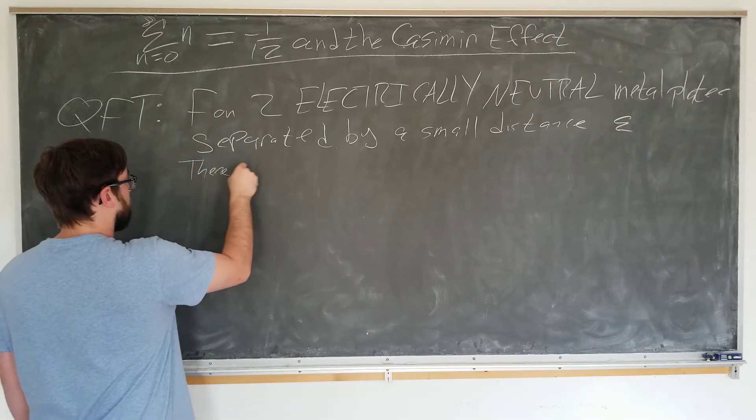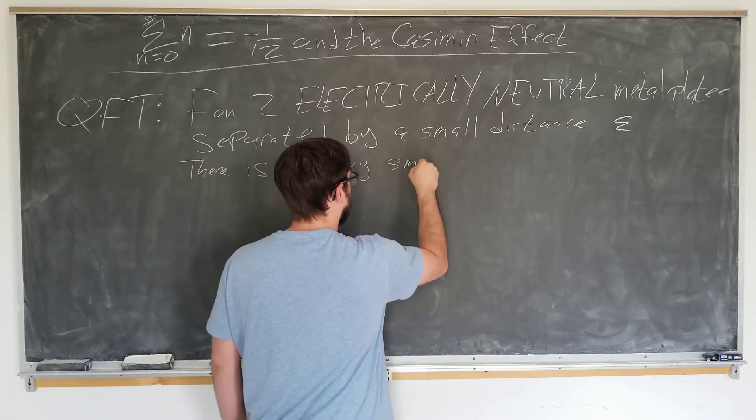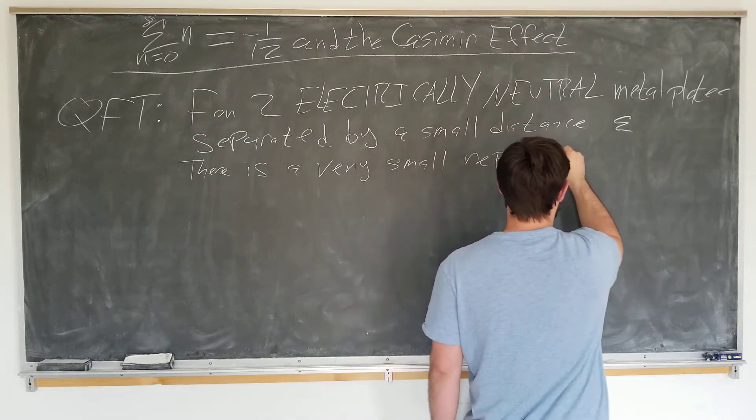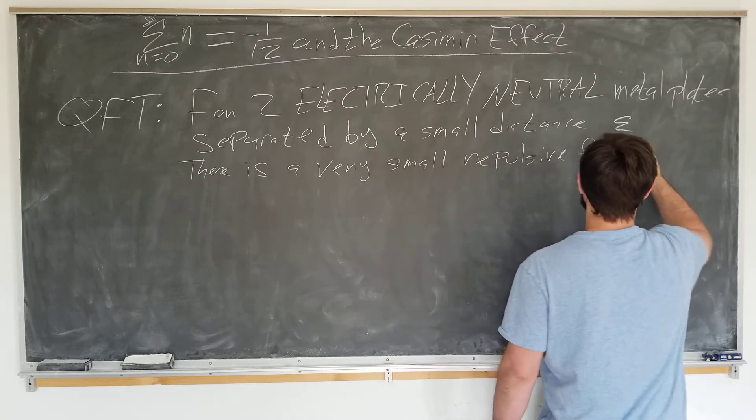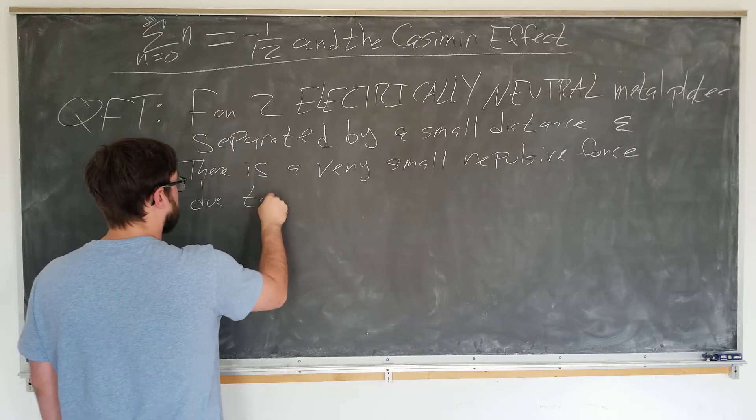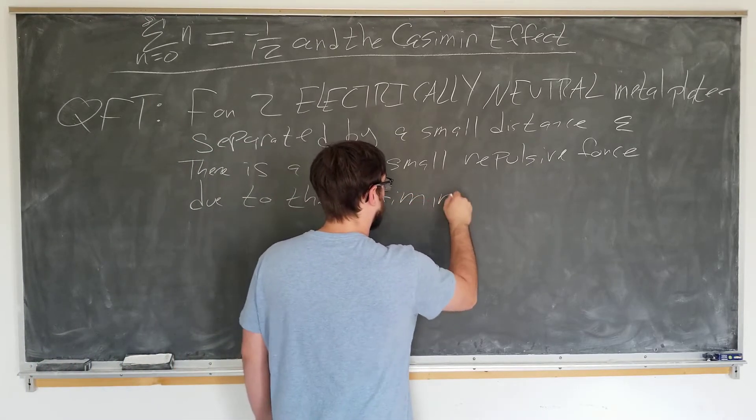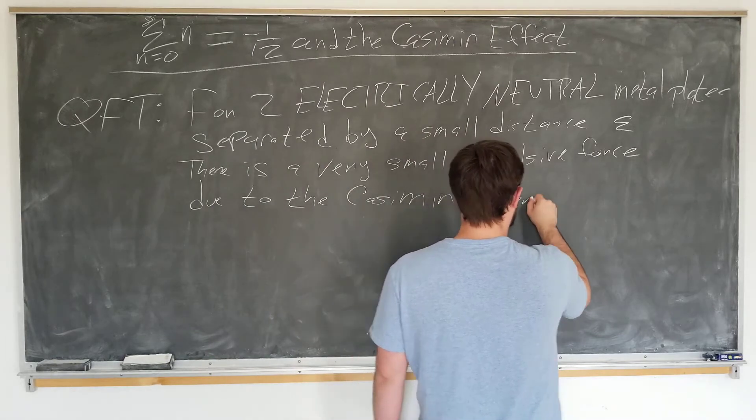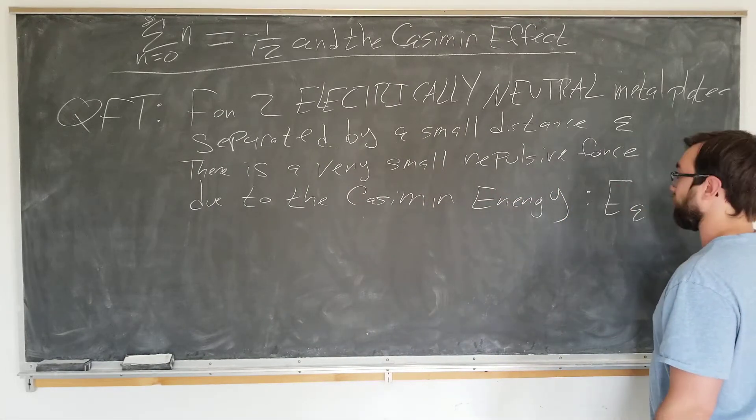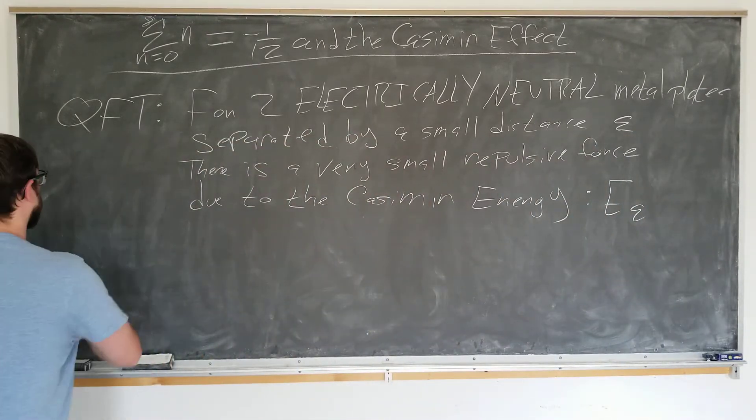There is a very small repulsive force due to the Casimir energy, which we will be calling E_epsilon. And the physical situation that we'll be considering is as follows.